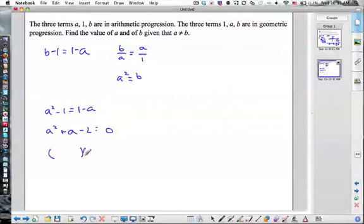So if we factor this, we have A and A, 2 and 1, and I need a minus and a plus. So A can either be negative 2 or A can be 1.